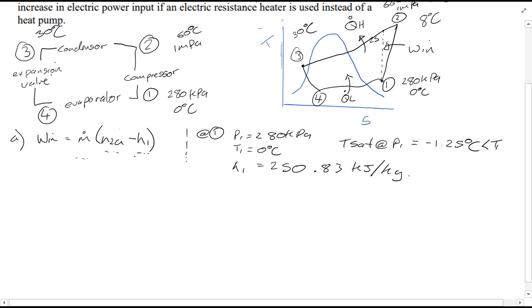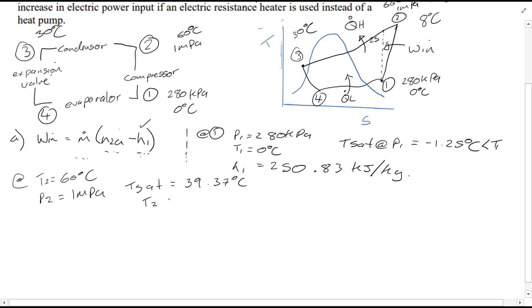Having found H1, we now find H2. At point 2, temperature equals 60 degrees C and pressure equals 1 megapascal. The saturation temperature at this pressure is 39.37 degrees C, and since T2 is greater than T_sat, the refrigerant is superheated. Using table A-13, H2 is equal to 293.38 kJ/kg.